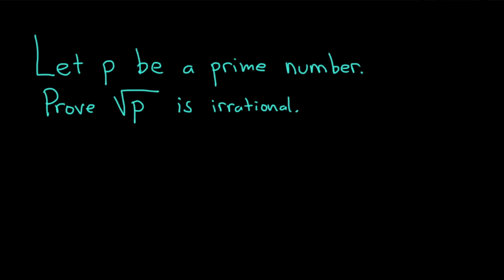Hello, in this video we're going to do a really cool problem. We have p, a prime number, and we're going to prove that the square root of p is irrational. This is a really cool problem because we're only going to prove it using some basic stuff. If you've taken college algebra, you actually in theory might know all of the material needed to come up with this proof on your own.